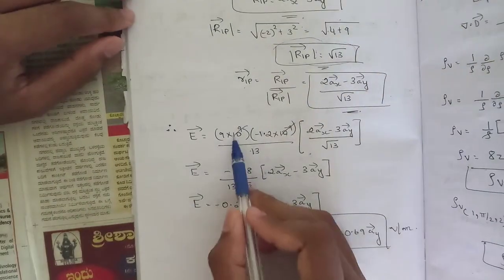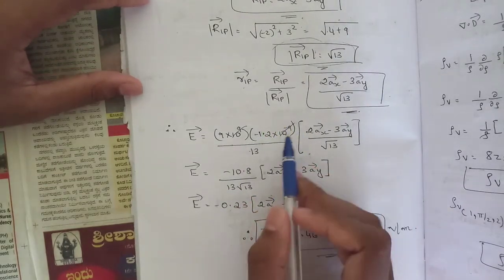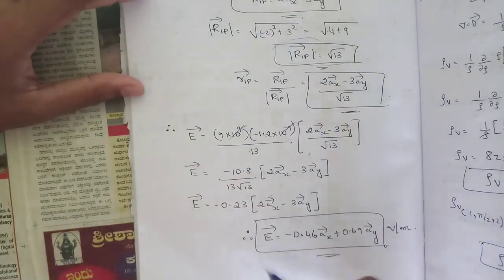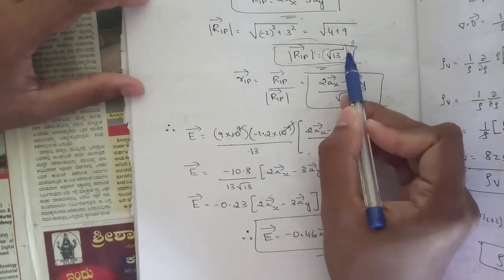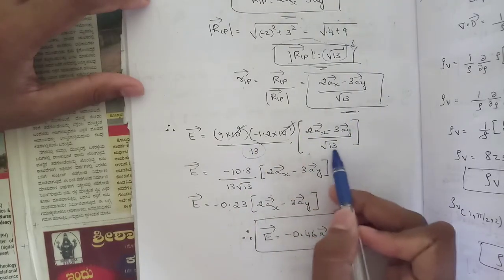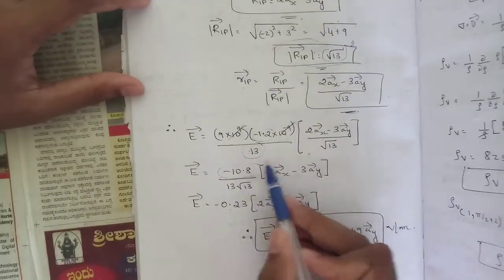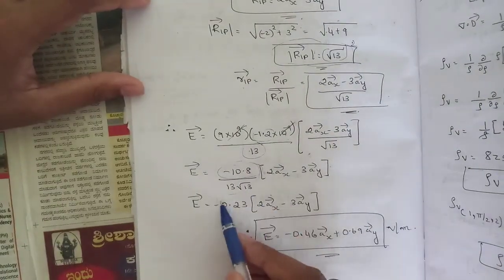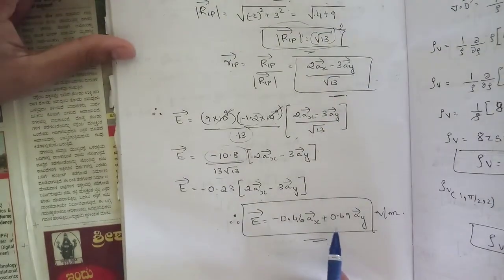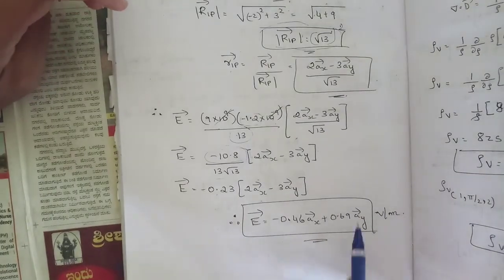Substituting into E: 9 into 10⁹ times (−1.2 into 10⁻⁹) divided by 13, times (2ax − 3ay) divided by √13. The 10⁹ terms cancel. 9 times −1.2 equals −10.8, divided by 13√13, times (2ax − 3ay). This gives −0.23 times (2ax − 3ay), which simplifies to −0.46 ax plus 0.69 ay volts per meter.